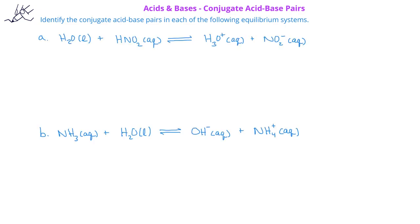In this problem, we're asked to identify the conjugate acid-base pairs in each of the following equilibrium systems. Let's look at the first example. In this situation, we have water reacting with nitrous acid, HNO2, to produce the hydronium ion and the nitrite ion, NO2 minus.